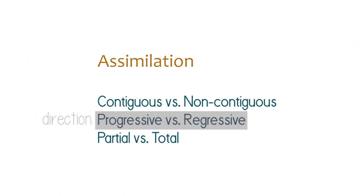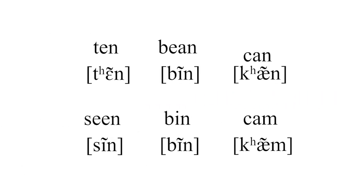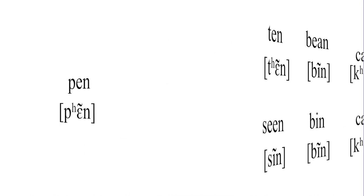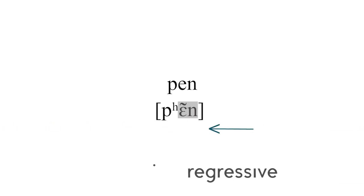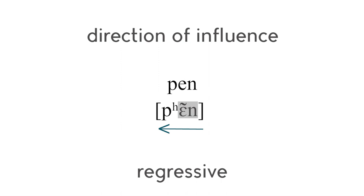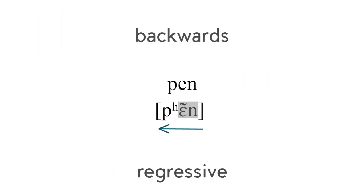It may be confusing because it means the opposite to what some expect. Regressive assimilation can also be referred to as anticipatory assimilation. All of those nasalizations are partial contiguous regressive assimilation. It's non-intuitive to some people because they think: a vowel becomes similar to the following consonant, so shouldn't that be progressive? But no — it's not about what becomes something, it's about what influences what. The following sound influences the previous sound, so the direction of influence is going backward — hence regressive.